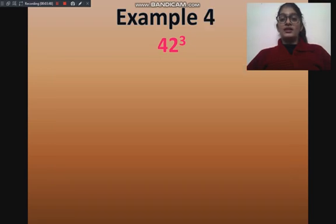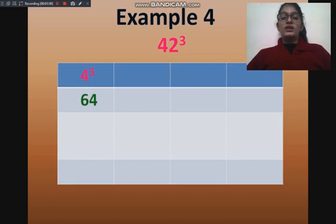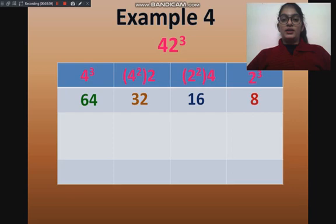Now let's take our last example, that is 42 cube. For that, we will start from the left-hand side. First, we will write 4 cube that is 64, then 4 square into 2 that is 32, then 2 square into 4 that is 16, then 2 cube that is 8. Now we will multiply both the middle terms with 2. So, double of 32 is 64 and double of 16 is 32.